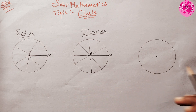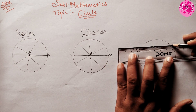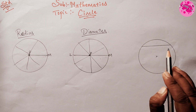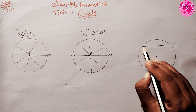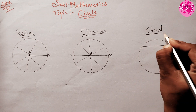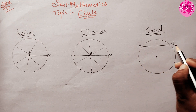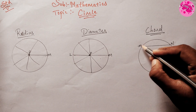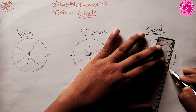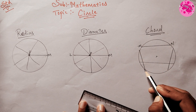Here I have drawn another circle with a line that is not passing through the midpoint, nor is it joining the center. A line joining any two points on a circle is called a chord. Here MN is a chord of the circle. We can draw a chord anywhere on the circle, but it must join two points on the circle.